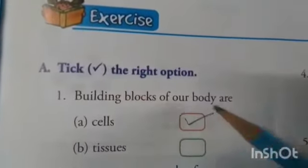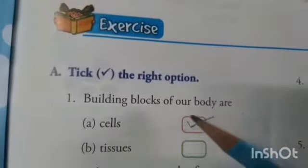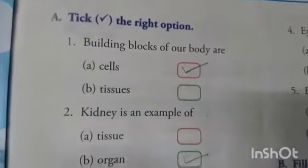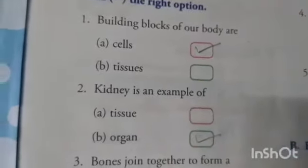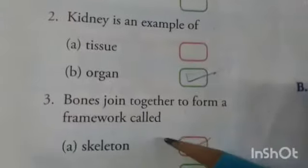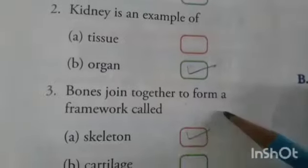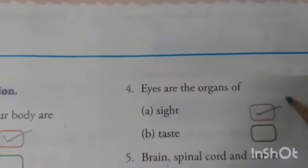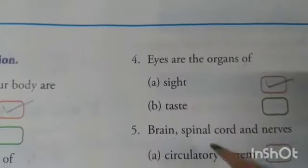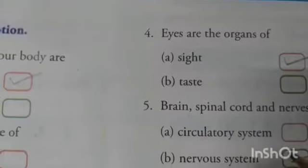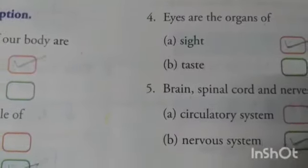First one: building blocks of our body are cells — tick it. Question 2: kidney is an example of an organ — tick it. Question 3: bones join together to form a framework called skeleton — tick it. Fourth: eyes are the organs of sight — option A is the correct answer. Fifth: brain, spinal cord and nerves form the nervous system — option B is the correct answer.